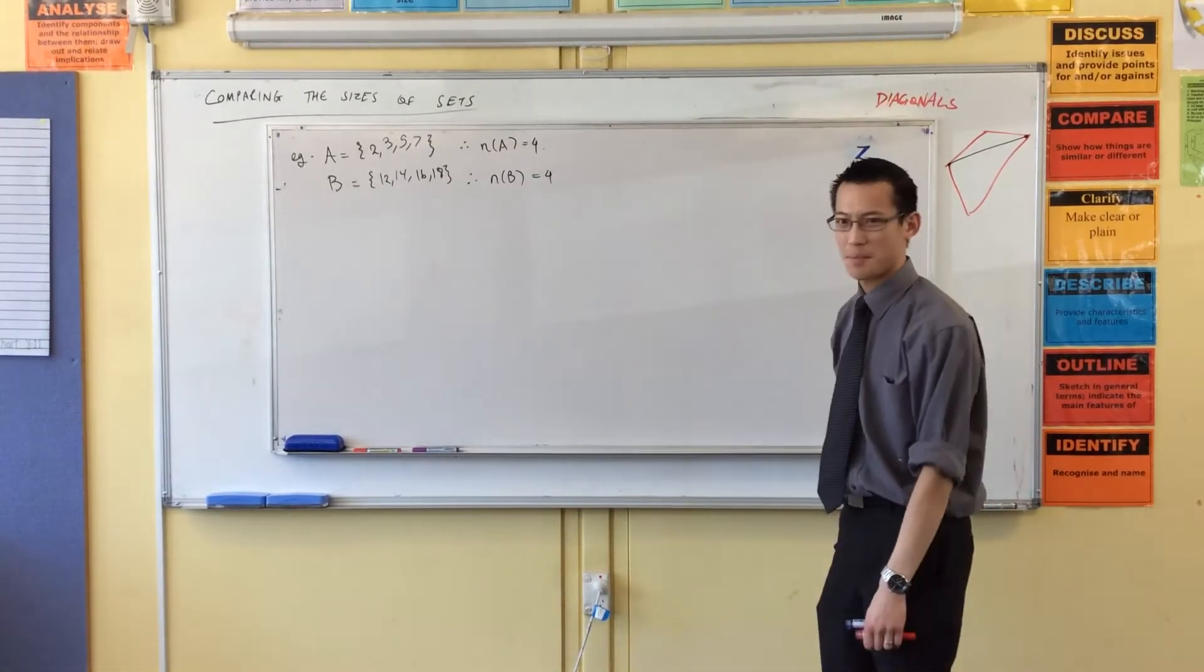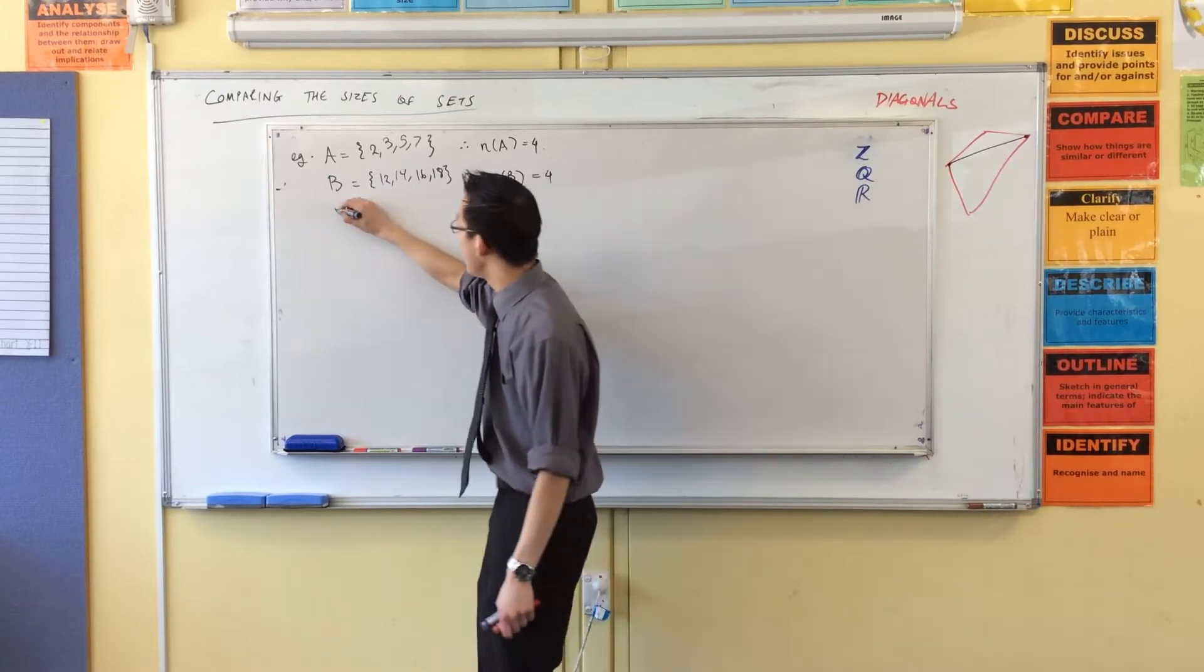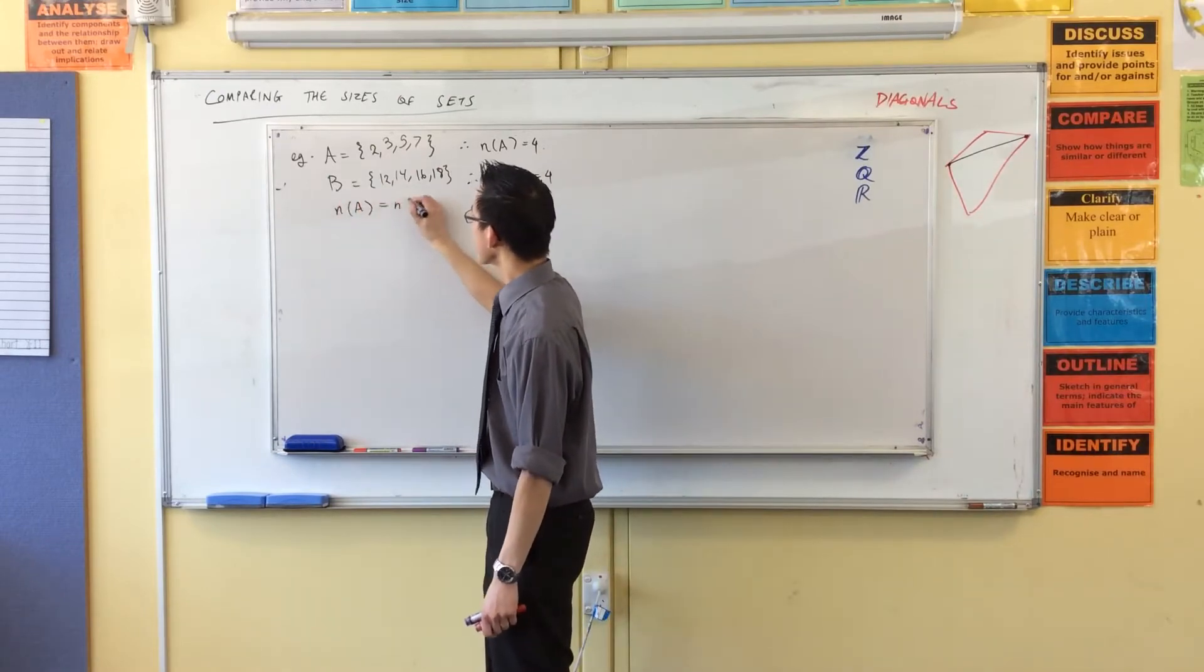So you're like, what's the big deal? I know the size of this one, I know the size of this one, therefore they're the same. Okay? So in comparing the sizes of these sets, the way I do it is I work out what the size of each one is. I see that they're identical, so I say the sizes are identical.